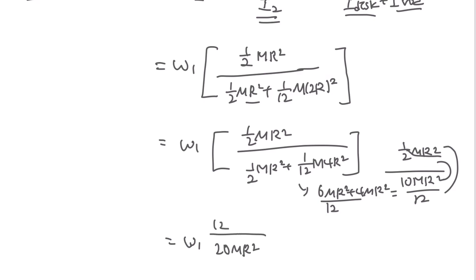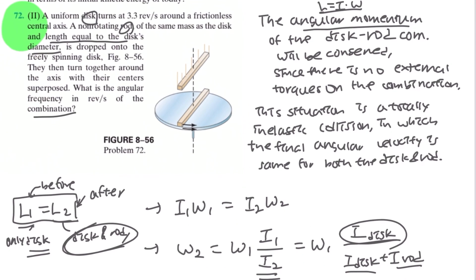And if you do this over this, it would be omega1 times 1/2 MR^2 over 10/12 MR^2, so you would have your MR^2 being canceled out, and if you simplify these values it will be omega1 times 3/5, right?